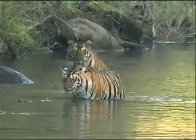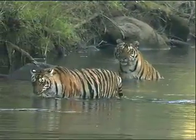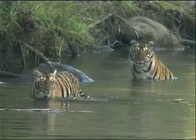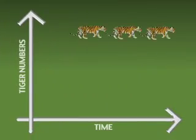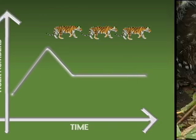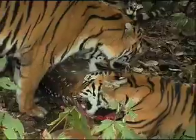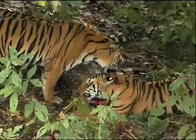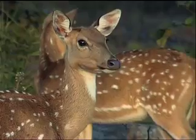To effectively conserve tigers in the wild, it is important to be able to reliably estimate and monitor their numbers. This will tell us whether tiger populations in various reserves are going up, going down, or holding steady. Since tiger numbers are generally closely linked to the availability of prey, monitoring tigers also involves reliably estimating the numbers of prey animals in a forest.